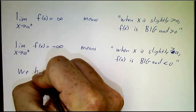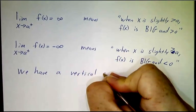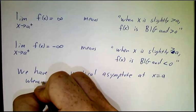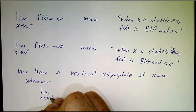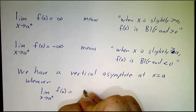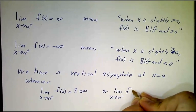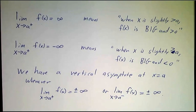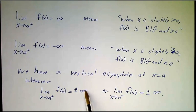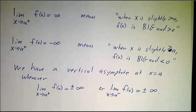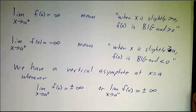And we have a vertical asymptote at x equals a whenever the limit as x approaches a from above of f of x is either infinity or minus infinity, or the limit as x approaches a from below of f of x is infinity or minus infinity. If any of these things happen, you've got the curve screaming up to infinity or crashing down to minus infinity — it's either going up through the roof or down through the floor — and you get a vertical line that the curve is getting closer and closer and closer to. So what we're going to do next time is see what kind of functions actually have vertical asymptotes.